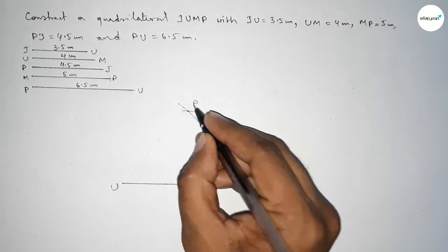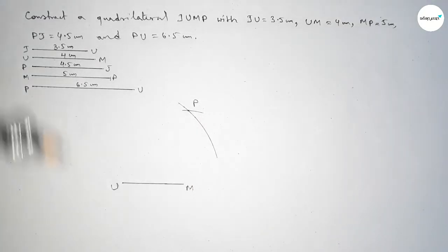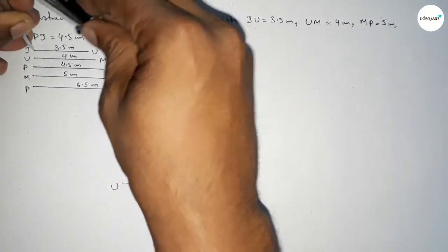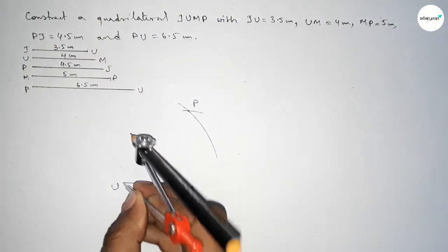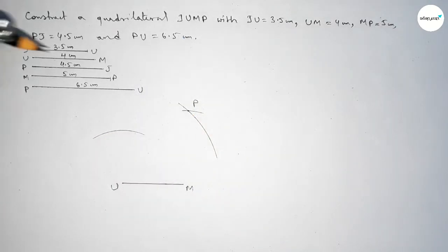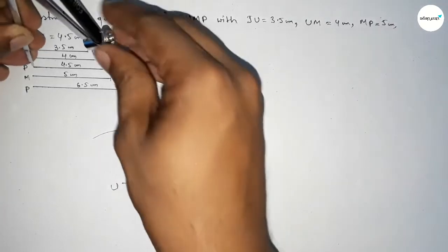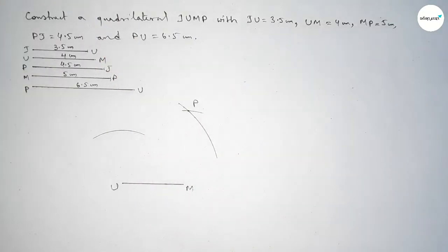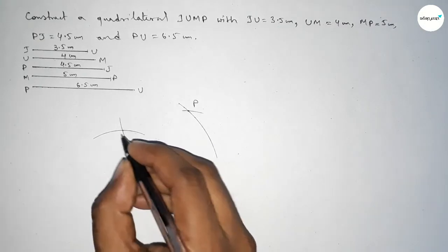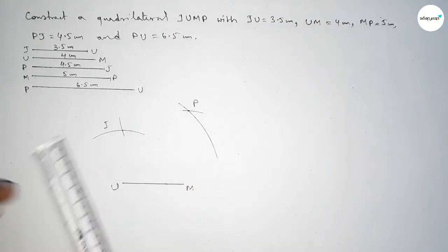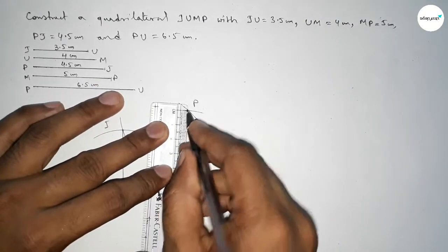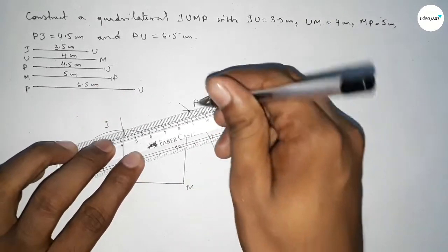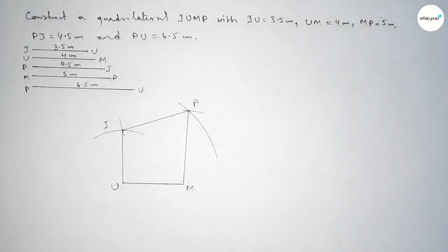Both arcs intersect at point P. Next, taking length JU equal to 3.5 centimeter with the compass, we place it on point U and draw an arc. Then taking length PJ equal to 4.5 centimeter and placing the compass on point P, we draw another arc. Both curves intersect at point J.